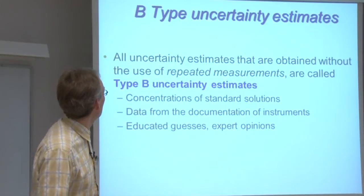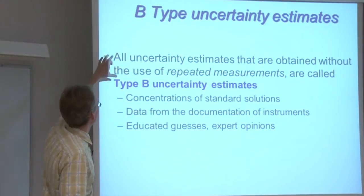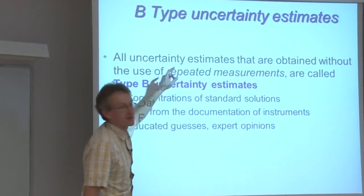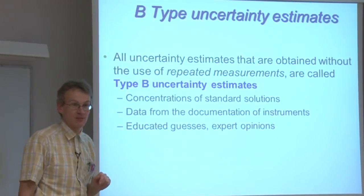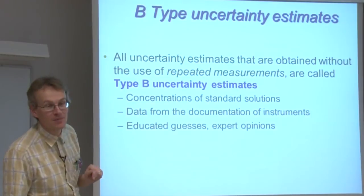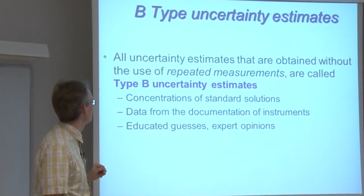Secondly, all such uncertainty estimates that are obtained without the use of repeated measurements are called B-type or type B uncertainty estimates.